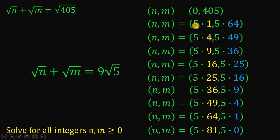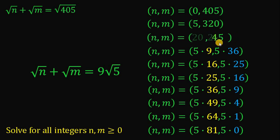On the next set, we have 5 times 1 which is 5 and 5 times 64 will give us 320. So, another pair is 5 comma 320. Another pair is 5 times 4, simply 20, and 5 times 49 will give us 245. Another pair is 5 times 9 which is 45 comma 5 times 36 or simply 180.